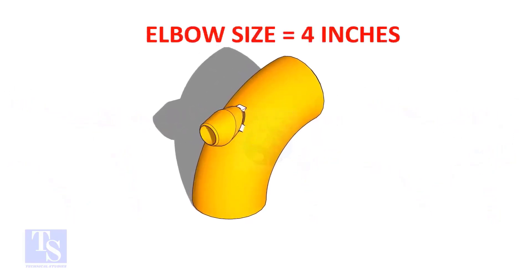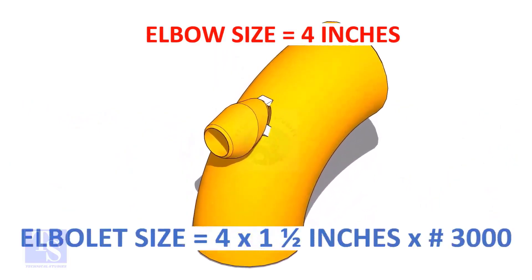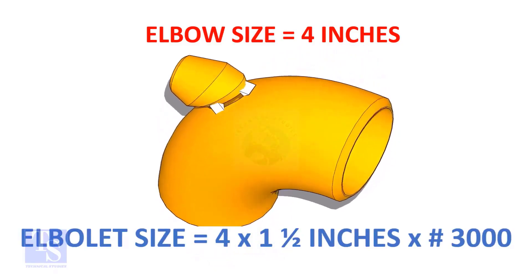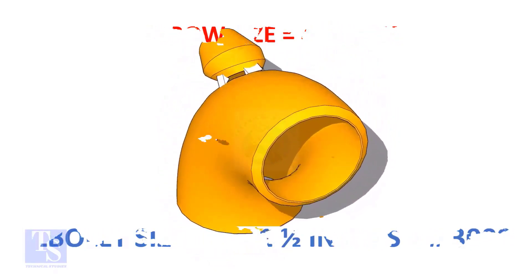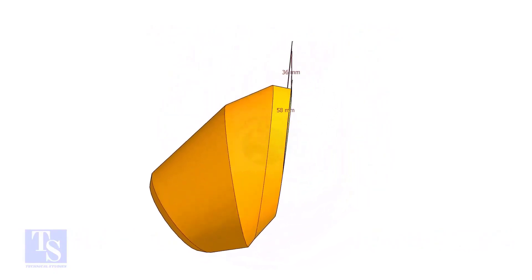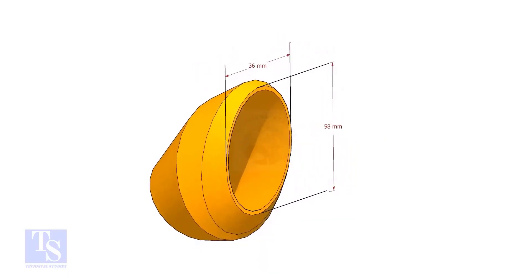The size of our elbow is 4 inch, and the size and rating of the elbowlet is 1.5 inch and 3,000 pounds respectively. The bottom opening size of the elbowlet is 36mm by 58mm. Please note down these dimensions.